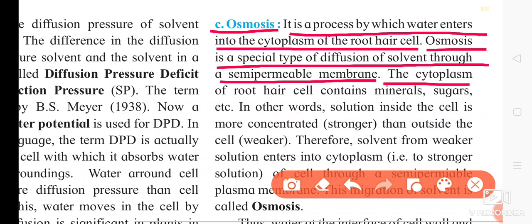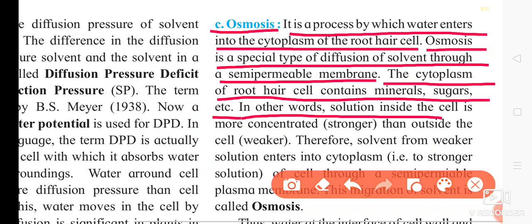The cytoplasm of the root hair cell contains minerals and sugar, etc. In other words, the solution inside the cell is more concentrated — it is stronger because this solution contains more solutes dissolved in the solvent, and that is why this solution is called the more concentrated solution.